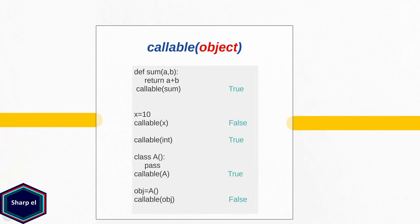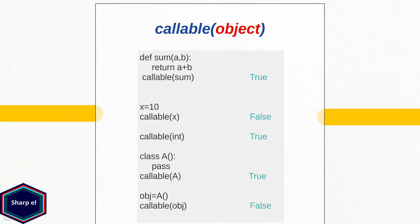Let's start with the function callable. The callable function takes an object as an argument and checks whether the object is callable or not. In Python, functions and classes are callable objects, because calling a function returns some value and calling a class returns an instance of that class.